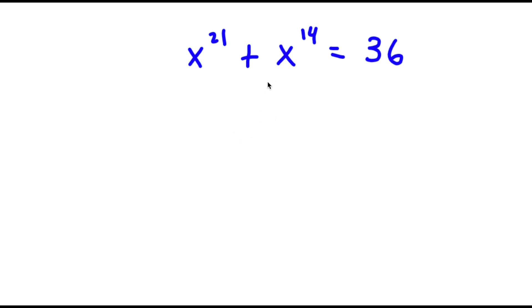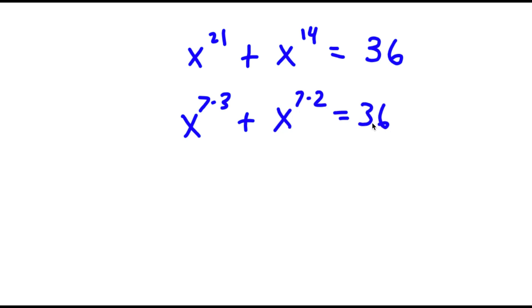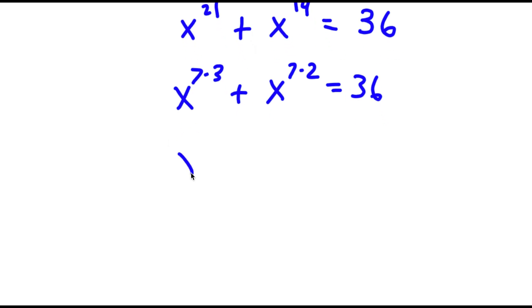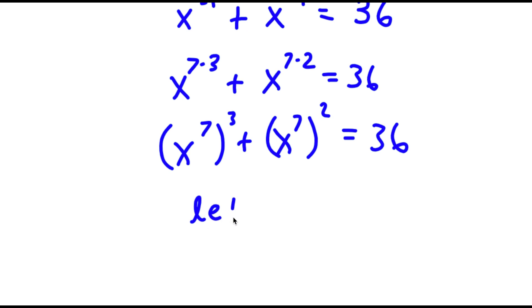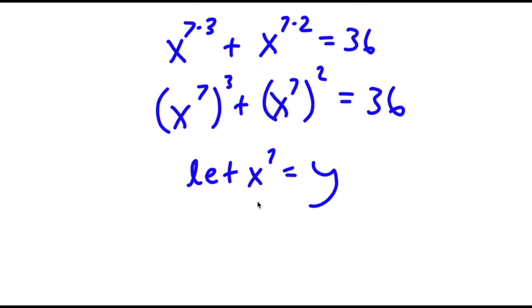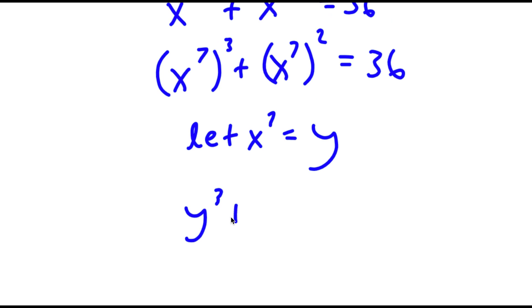In this problem I have x to the power of 21 plus x to the power of 14 is equal to 36. I'm going to rewrite this as x to the power of 7 times 3 plus x to the power of 7 times 2 equals 36, then as x to the power of 7 to the power of 3 plus x to the power of 7 to the power of 2 equals 36. Now I can let x to the power of 7 equal the variable y, so I have y cubed plus y squared is equal to 36.